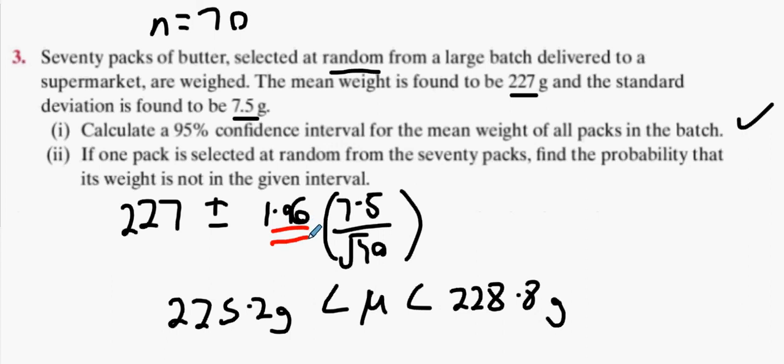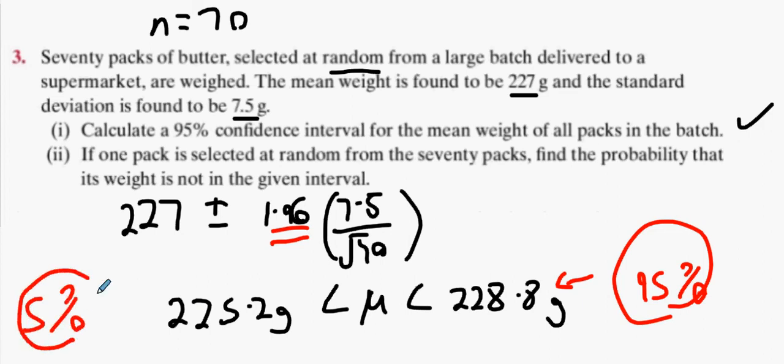If one pack is selected at random from 70 packs, find the probability that the weight is not in the given interval. What interval did we just do? The 95%. 95% of all of them are within this interval. If it's not in that interval it must be part of the 5% that isn't.